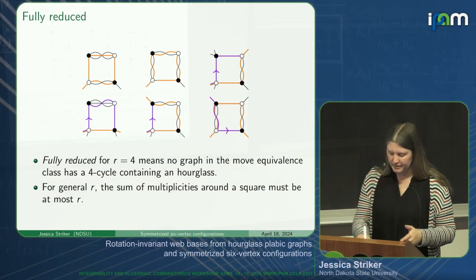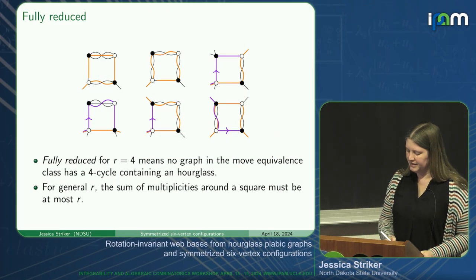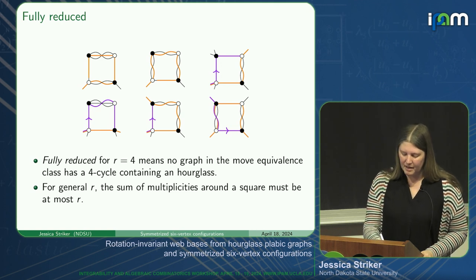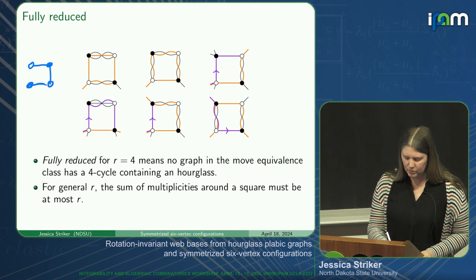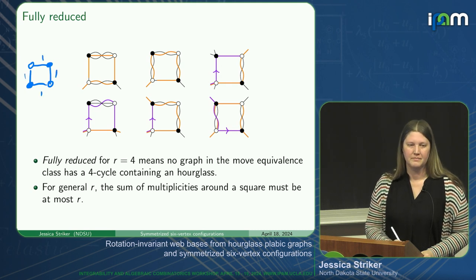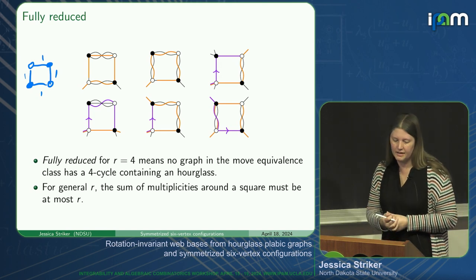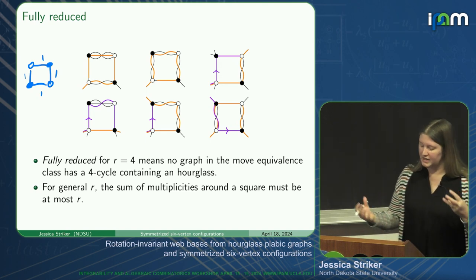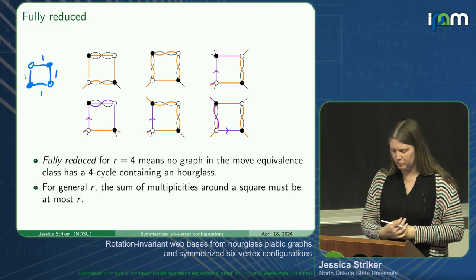'Fully reduced' for R equals four means that no graph in this move equivalence class has a four-cycle containing an hourglass. Here are some pictures of four-cycles that contain hourglasses—all of these are bad. The trip permutations are doing bad things; we don't want them to have bad crossings. In general, these trip-theoretic arguments imply that the sum of the multiplicities around a square must be at most R. This explains why in R equals three, we could not have a square: the sum of multiplicities around a square would be four, which is bigger than three. This is how the non-elliptic condition of Kuperberg's webs is included here.